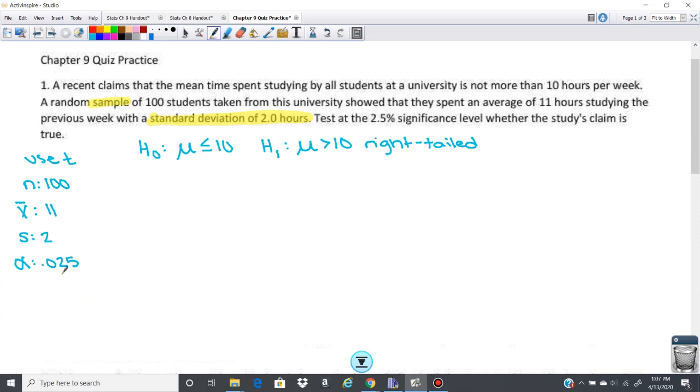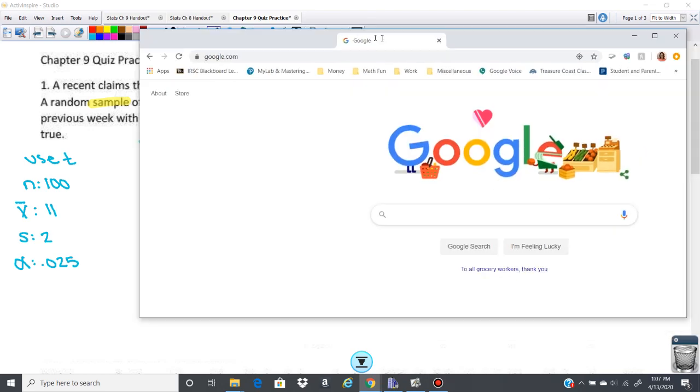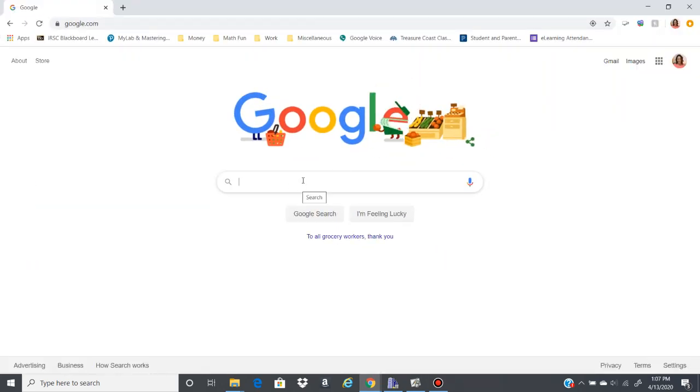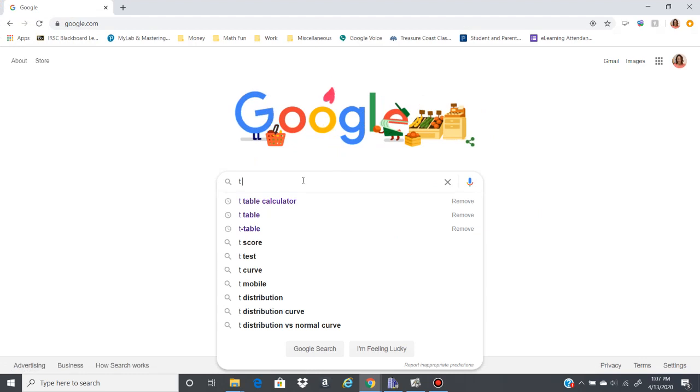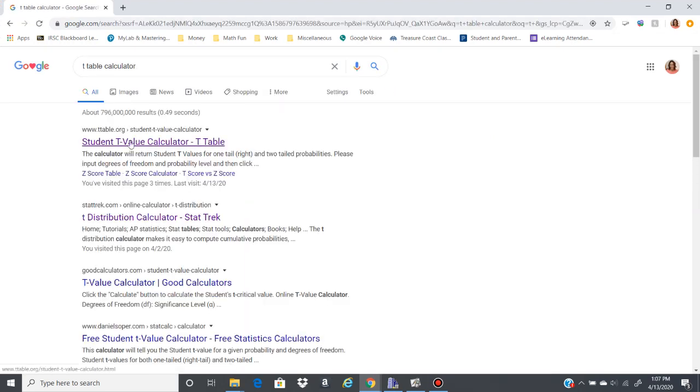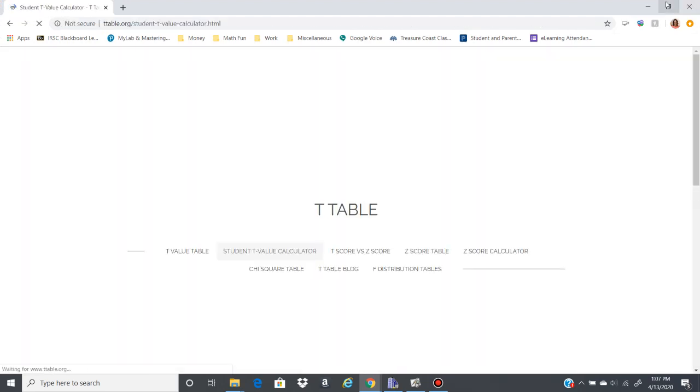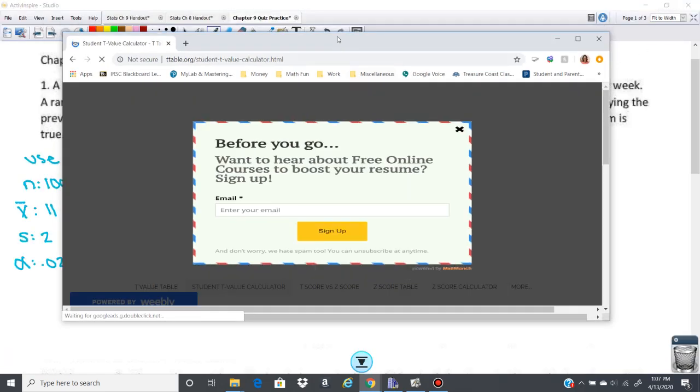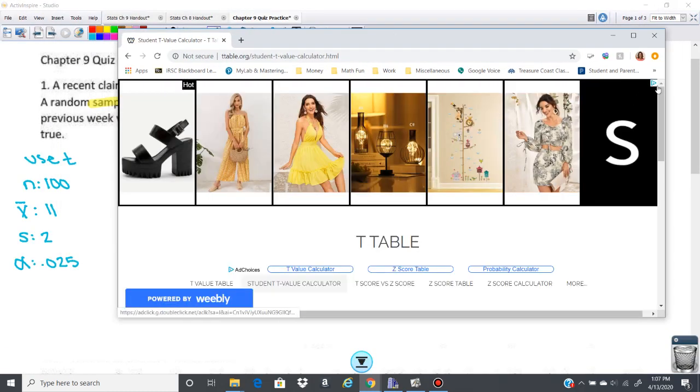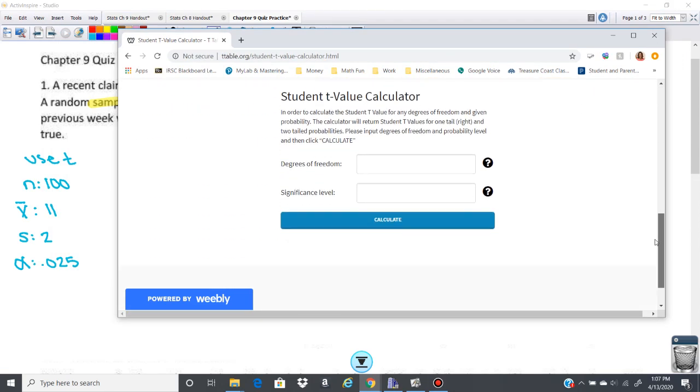Let's go ahead and get our critical value that we need here. So we need a t-table for our critical value. Typically what I'm going to do is type into Google t-table calculator. And then that's just the first one on here. Now I'm going to put the information that I need in here. Degrees of freedom is going to be n minus 1, so 99 for my degrees of freedom, significance level of 0.025.